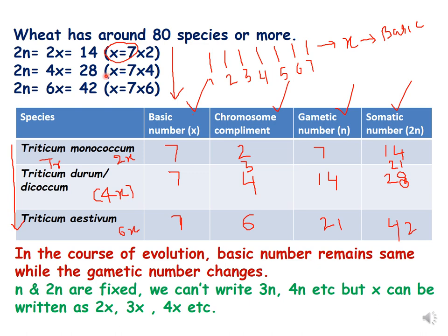In this table you can see three different species. The first has 2n = 2x = 14, so x is 7 and it is present in two sets: 2x, and 7 × 2 = 14. In the second species x is 7 but it is present in four sets, so 7 × 4 becomes 4x, equal to 28. Then the same seven chromosomes are present in six sets: 7 × 6 becomes 6x, equal to 42.